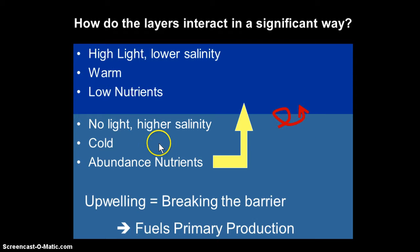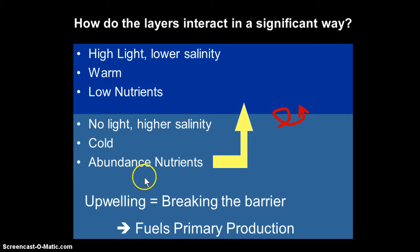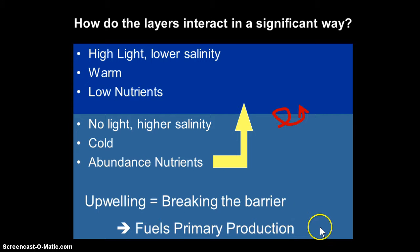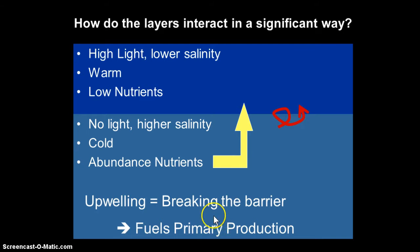So what happens if we break that layer and start mixing these two together — in the term that we call upwelling? We break that barrier and pump this abundance of nutrients along with carbon dioxide and oxygen up to places where they're necessary, and what happens is we fuel further blooms of primary production. In fact, this upwelling process of deep water into the surface, bringing with it all these fuels, is what accounts for the majority of the primary production in the ocean.